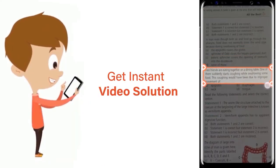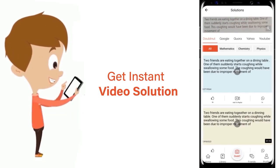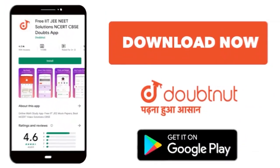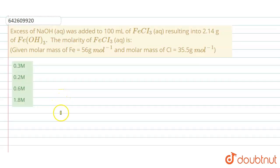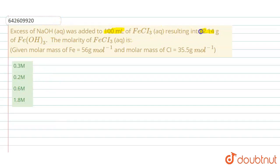The question says that excess of NaOH (aq) was added to 100 mL of FeCl₃ (aq), resulting in 2.14 grams of Fe(OH)₃.